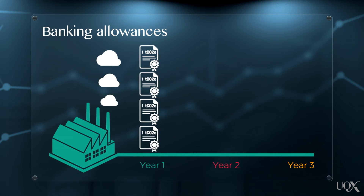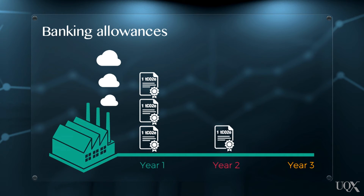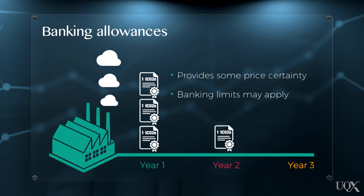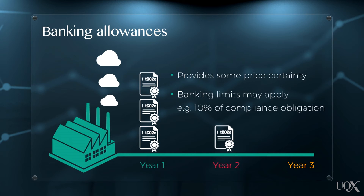Companies with excess allowances may, alternatively, choose to bank them for future use. This can be a useful strategy to provide some price certainty when the carbon price is anticipated to increase in future years. However, it's important to note that some emissions trading schemes limit the amount of allowances a company can bank. For example, the Korean ETS imposes a banking limit of 10% of a company's annual emissions. So if Company X has a compliance obligation of 60,000 tonnes of CO2 equivalent, it can only bank a maximum of 6,000 allowances for future use.